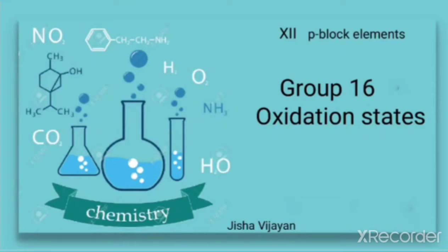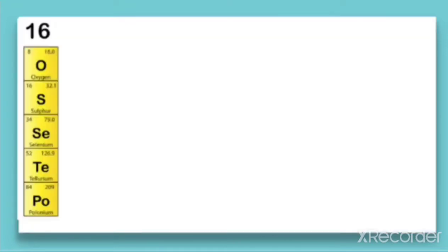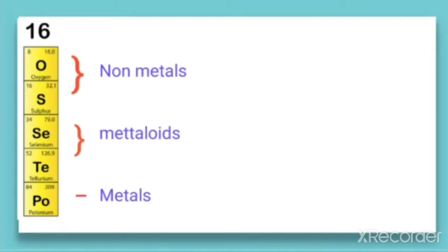Hello students, let us discuss the oxidation state of group 16 elements. These are Oxygen, Sulphur, Selenium, Tellurium, and Polonium. The first member of this group is Oxygen, therefore this group is called the Oxygen family, in which Oxygen and Sulphur are non-metals, Selenium and Tellurium are metalloids, and Polonium is the metal.